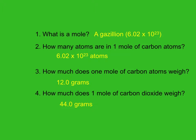How much does one mole of carbon weigh? That's 12 grams, and we get that from the atomic mass on the periodic table. How much does one mole of carbon dioxide weigh? That's 44 grams, and you get that by adding the atomic mass of one carbon and two oxygen. That was all M6, which covers both the bronze and the silver level.